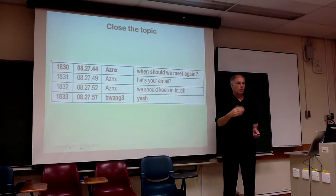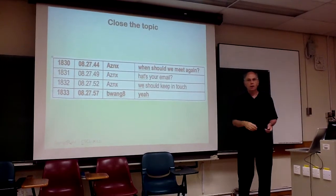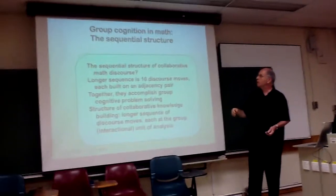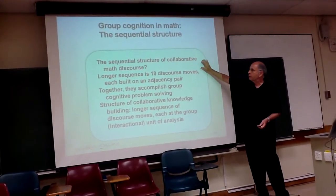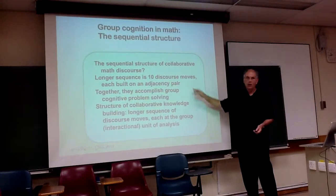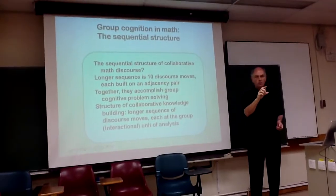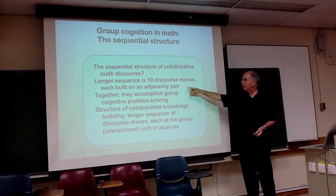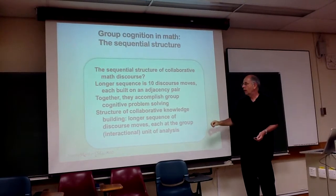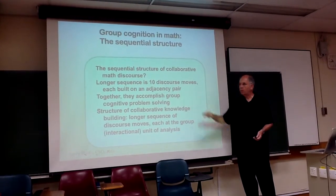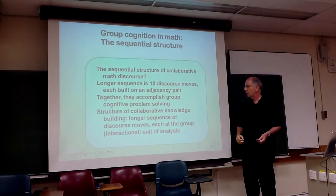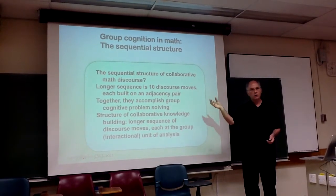Then they decide they want to meet again outside of this setting to talk about math some more. The point is that we've found a sequential structure: the longer sequence is a series of ten discourse moves, and each of the moves can be seen to be based on an adjacency pair in this conversation analysis way. Together this sequence accomplishes their cognitive problem — the group solves the problem through the set of ten adjacency pair moves.